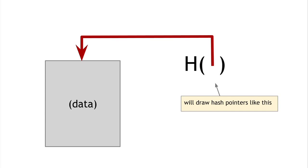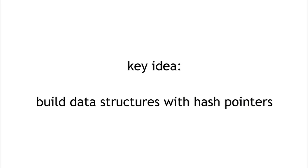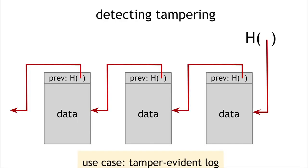We can take hash pointers and use them to build all kinds of data structures — take any data structure like a linked list or binary search tree and implement it with hash pointers instead of regular pointers. For example, here's a linked list built with hash pointers — a data structure we're going to call a blockchain. Just like a regular linked list where each block has data and a pointer to the previous block, here the previous-block pointer is replaced with a hash pointer. We remember the head of the list as a regular hash pointer.